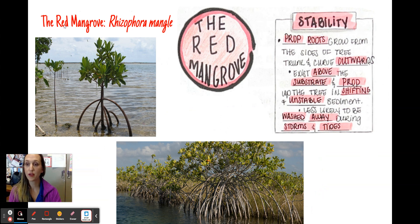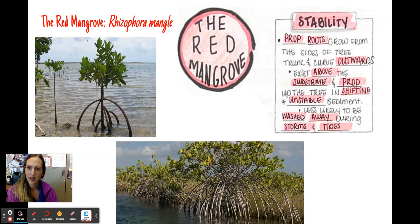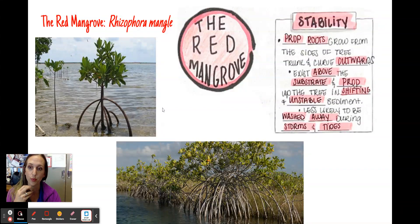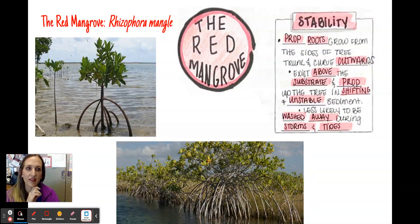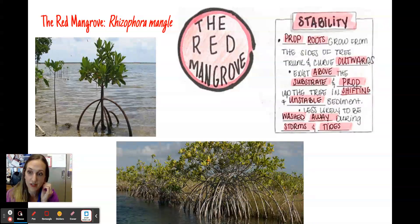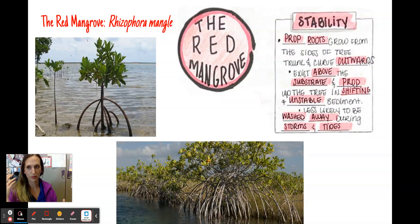The mangrove species we're going to focus on from your syllabus is Rhizophora mangle — notice it's written in italics with the genus capitalized. Key features are the prop roots: they grow from the sides of the trunk, curve outwards, and exist above the substrate. They prop up the tree and help it in a shifting or unstable substrate — very fine sediment that can experience tidal or wave movement.